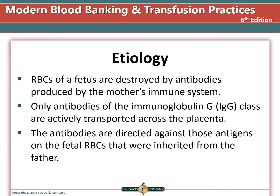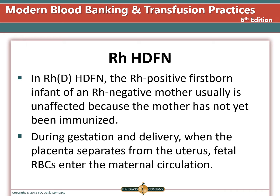The red cells of the fetus are destroyed by antibodies produced by the mother's immune system. Only IgG class antibodies are actively transported across the placenta. If the child's cells inherit the antigen from the father that the antibody is directed against, the baby will develop HDFN. The firstborn child is usually not affected because the mother has not been immunized against the father's antigens. But during gestation and delivery, when the placenta separates from the uterus, fetal cells may mix with maternal circulation.